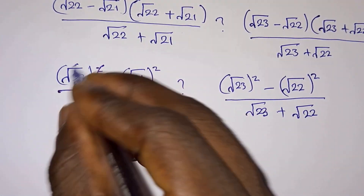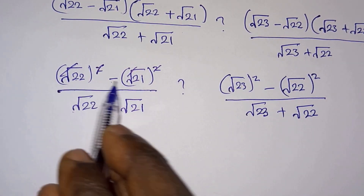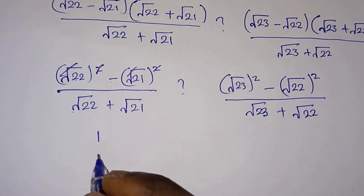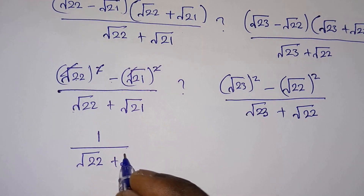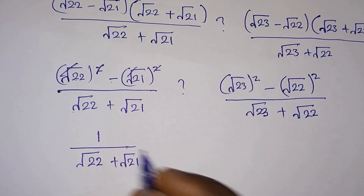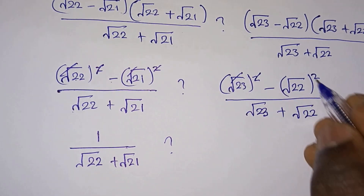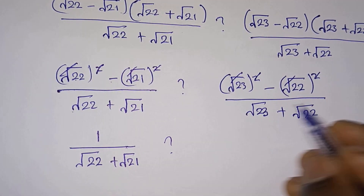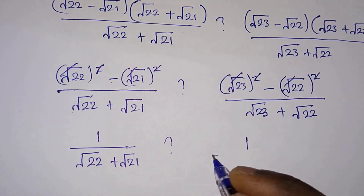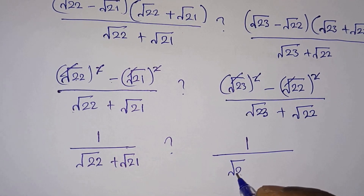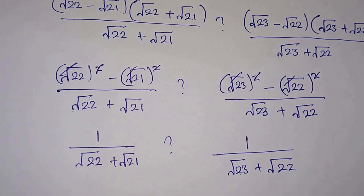The squares cancel: we have 22 minus 21 which is 1, divided by √22 plus √21. Then the squares also cancel on the other side: we have 23 minus 22 which is 1, divided by √23 plus √22.